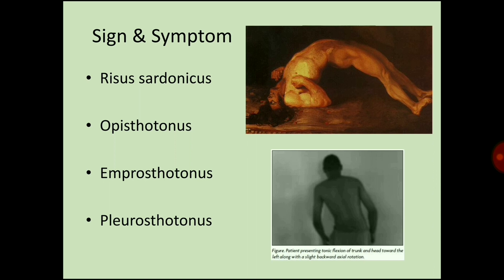The next sign is opisthotonos — a spasm of muscles causing backward arcing of the head, neck, and spine, as seen in severe tetanus, some kinds of meningitis, and strychnine poisoning. Next is emprosthotonos — a condition in which the body is bent sharply forward. Next is pleurosthotonos, commonly known as Pisa syndrome.